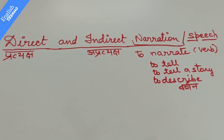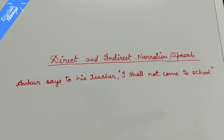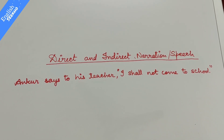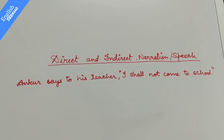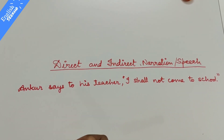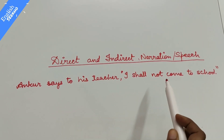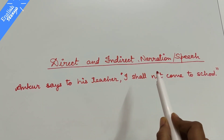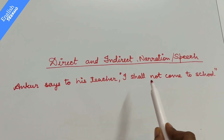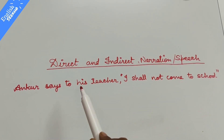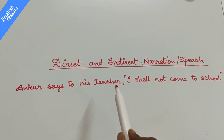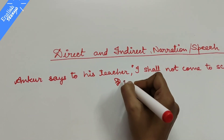Now see, I have written a sentence here. This is: 'Ankur says to his teacher, I shall not come to school.' Ankur koi ladka hai, apni teacher se keh raha hai ki main school nahi aaunga. Here you can see Ankur is a boy and he is saying to his teacher, 'I shall not come to school.' These words are spoken by Ankur himself. Because Ankur is directly talking to his teacher and conveying his message directly, this is in direct speech.